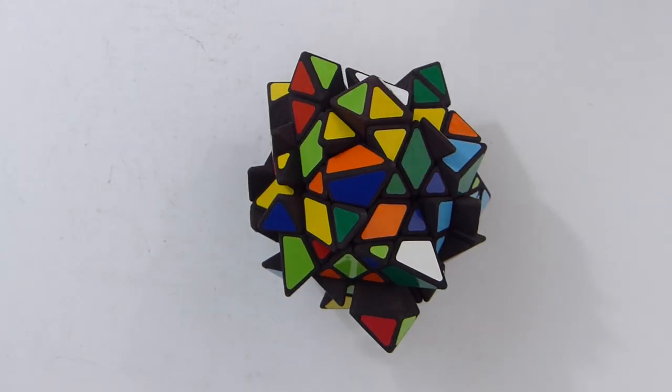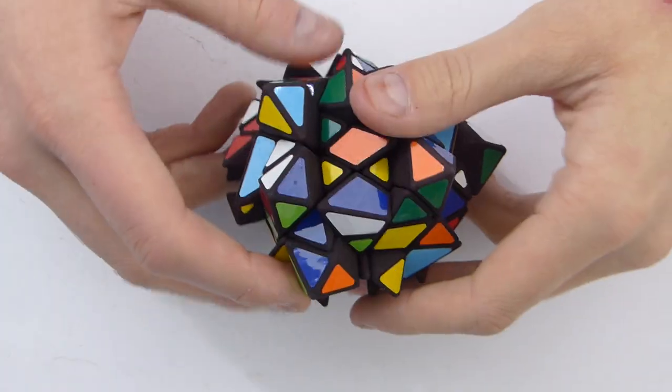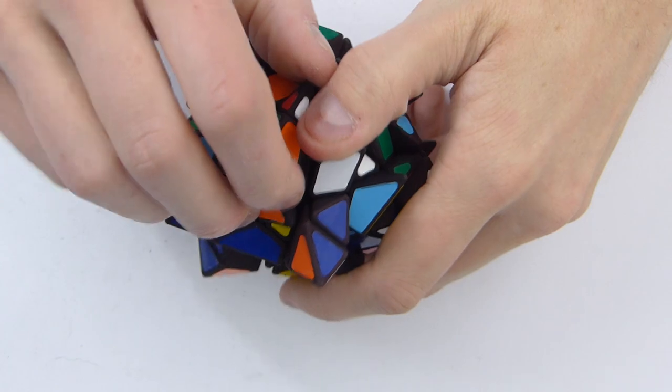Hey guys, I don't usually show the mechanism of my twisty puzzles on my YouTube channel, and I think it might be interesting, so I'm going to start with this, the Octahedron Starminx. I guess before we start, the first step is to disassemble this complete puzzle.